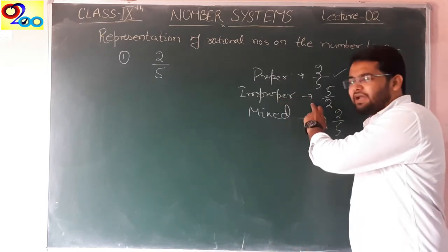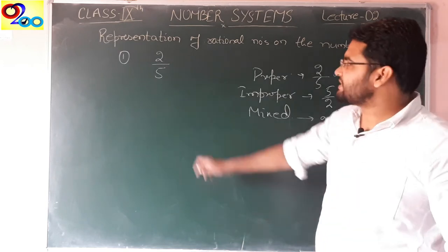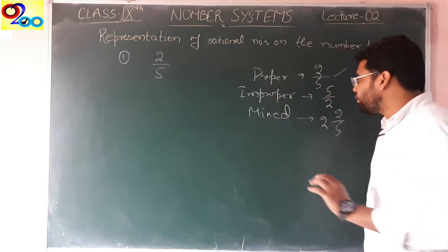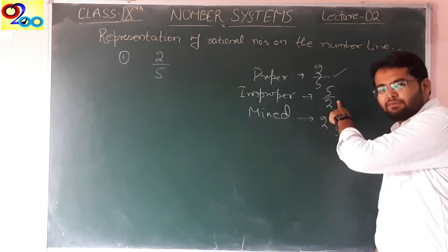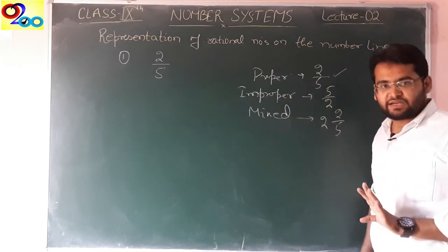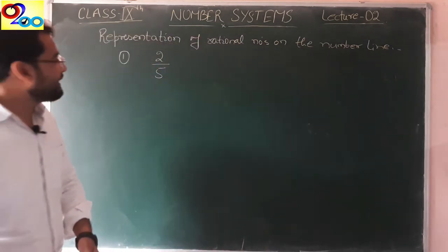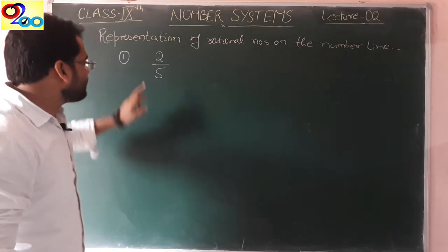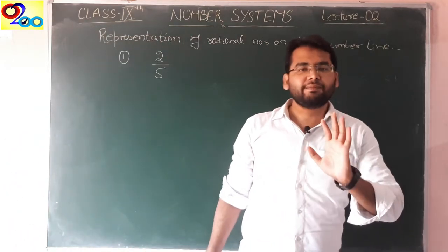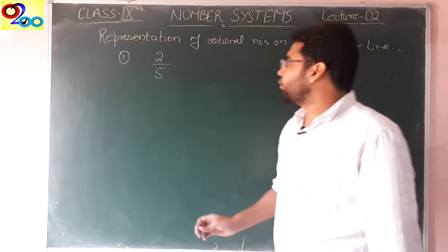In proper fraction, whatever value it will be, it will be greater than 0 and less than 1. What is improper? When my denominator is smaller than the numerator, that number can be greater. So whenever we represent a rational number on the number line, we try that the fraction should be in proper fraction form or mixed fraction form.